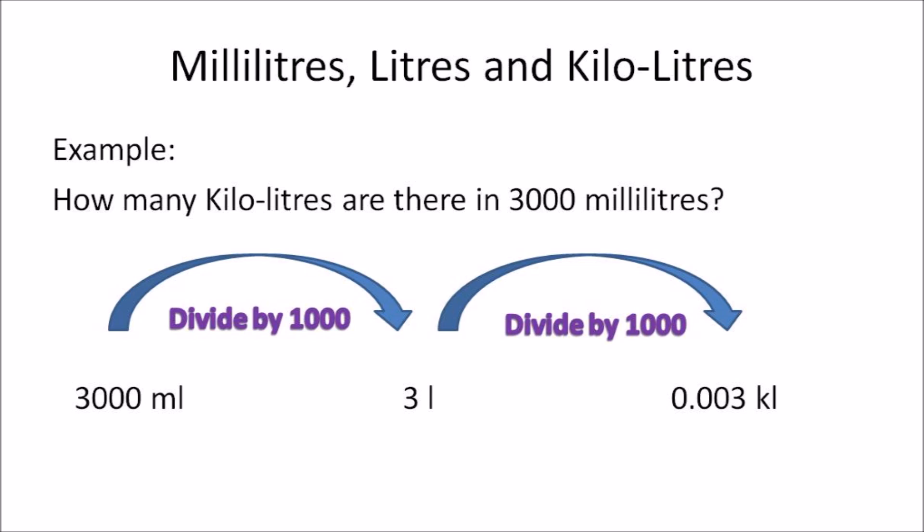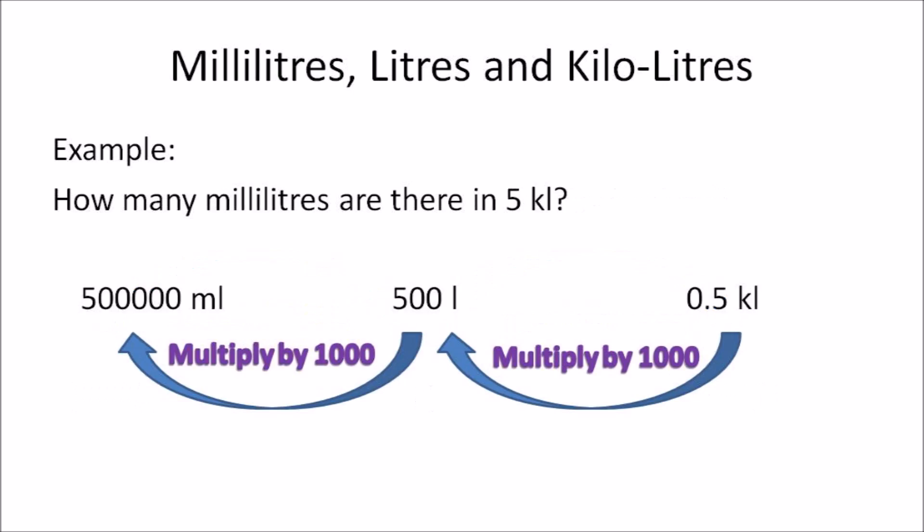In this example, how many kiloliters are there in 3000 milliliters? For this example you need to do two conversions — first convert milliliters to liters, then liters to kiloliters. So 3000 milliliters divided by 1000 gives you 3 liters, and then you divide by 1000 again to get the answer in kiloliters.